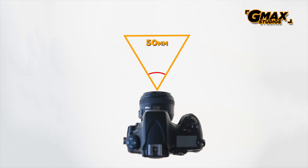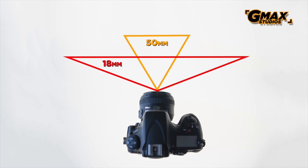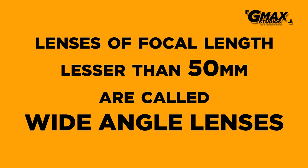Now as the focal length becomes shorter — smaller like 35, 24, 18, anything below 50 — the lenses start seeing wider and wider than the normal 50mm lens, so they are called wide-angle lenses. Some lenses are even able to see at an angle of 180 degrees or close to it; these lenses are called fisheye lenses.